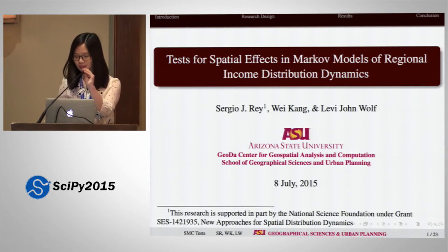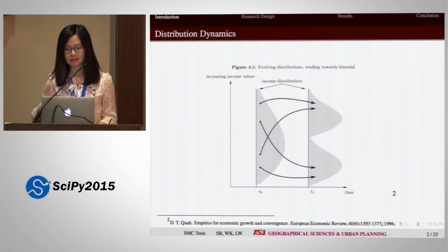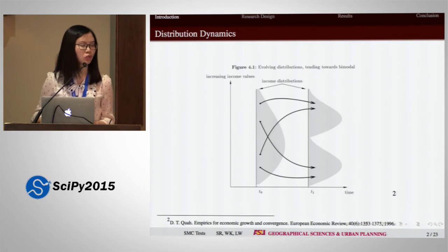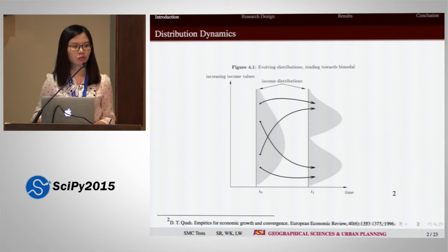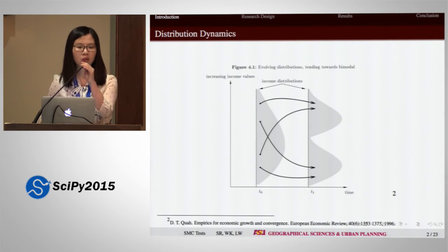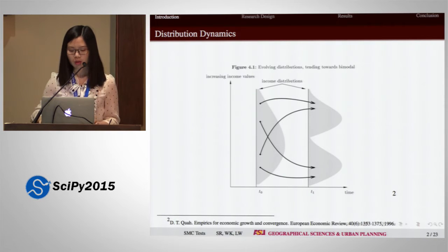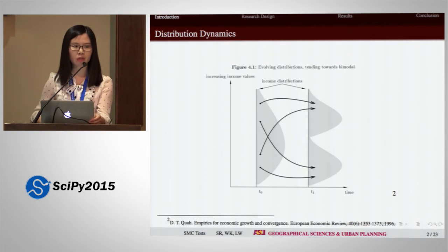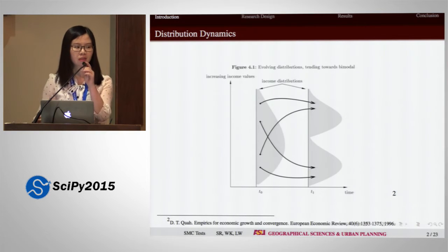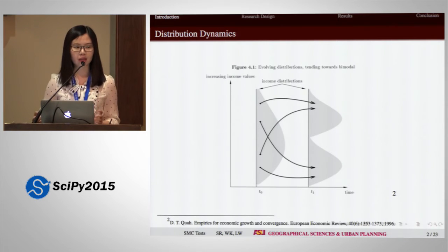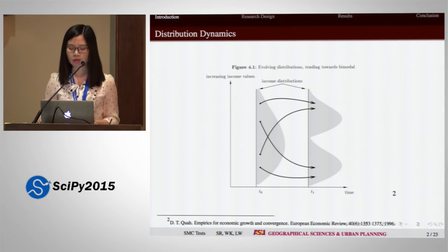So let's start with some background. Distribution dynamics concerns the study of both external and internal dynamics of cross-sectional distributions measured over multiple discrete time periods. External dynamics refers to changes in the overall morphological properties of distributions, such as convergence, divergence, and polarization. Internal dynamics is the mixing and the changes in the absolute and relative positions of observations within the distribution over time.